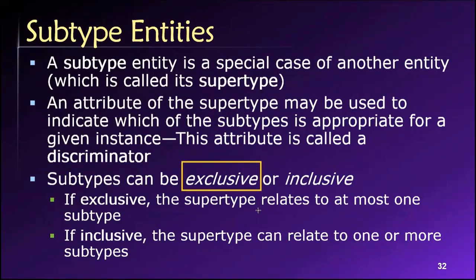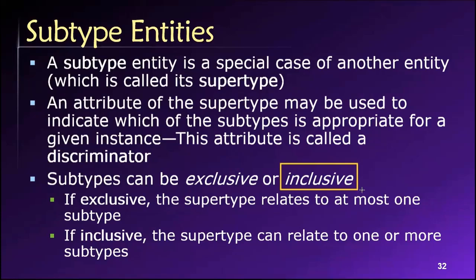But if it's possible for someone to be both a faculty member and a student simultaneously at the university, then it's going to be an inclusive supertype-subtype relationship. That person — remember, the person is the supertype — could simultaneously be playing two roles at the university, being a student and a faculty member, meaning they could simultaneously be members of two different subtypes or even more.